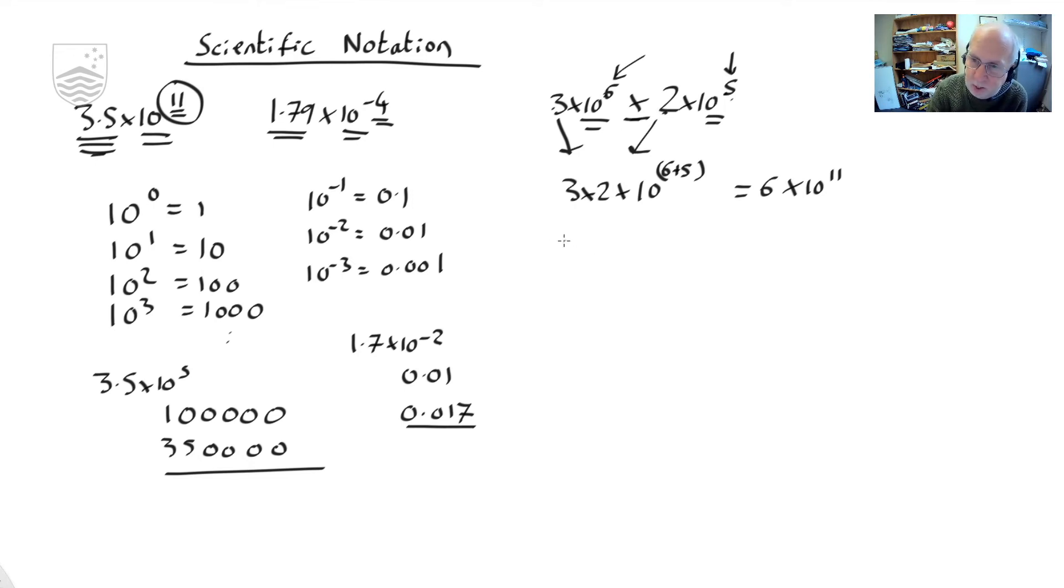So multiplying them, multiply the numbers out front, add the indexes, 10 to the power, whatever it is. If you divide, let's say we want 3 by 10 to the 6 divided by 2 by 10 to the 5. So you take the numbers out front and divide them. So that's 3 over 2. And you now subtract the indexes. So it's going to be 10 to the 6 minus 5. So it's going to be 3 over 2 is 1.5 times 10, 6 minus 5 is 1, which is just going to be 15.